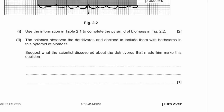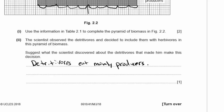The scientist decided to include detritivores with herbivores in the pyramid. Suggest what he discovered. Herbivores eat producers, so if detritivores are grouped with them, they probably eat mainly producers — they are primary consumers. You could also say they are eaten by secondary consumers. Choose one of those answers.